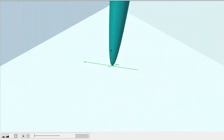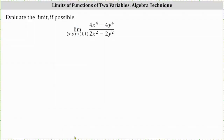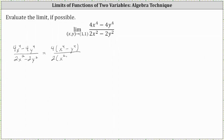Going back to our limit, we will begin by factoring the original function. Let's first factor the greatest common factor from the numerator and denominator. We factor 4 from the numerator and 2 from the denominator. Notice how we have a difference of squares in the numerator as well as the denominator. But because our numerator has higher powers, let's only factor the numerator. So we have 4 times the quantity (x squared plus y squared) times the quantity (x squared minus y squared) in the numerator.